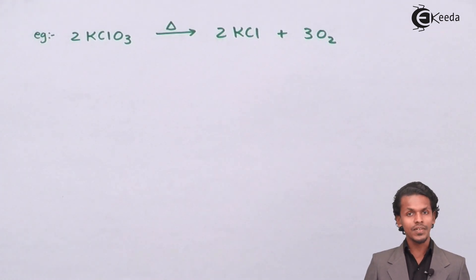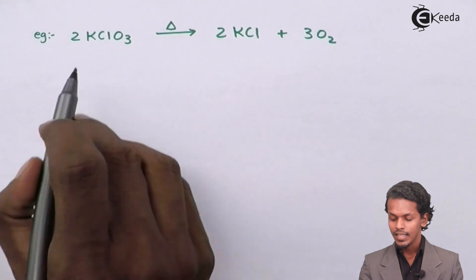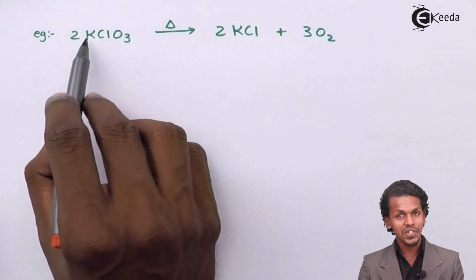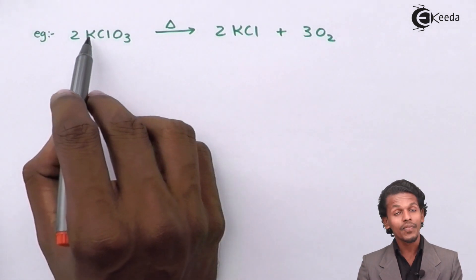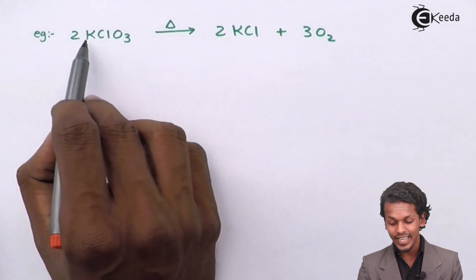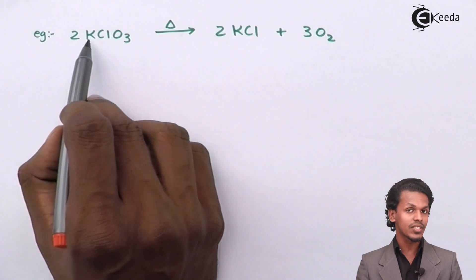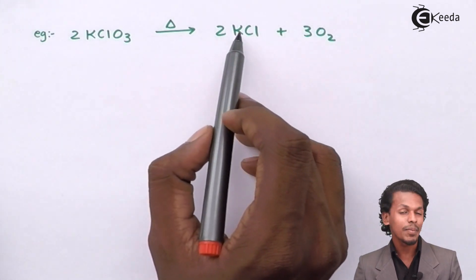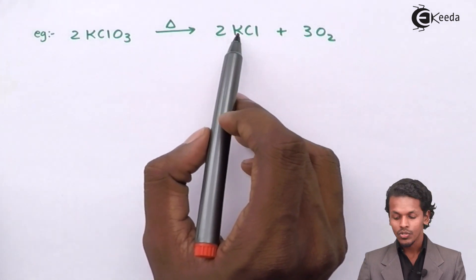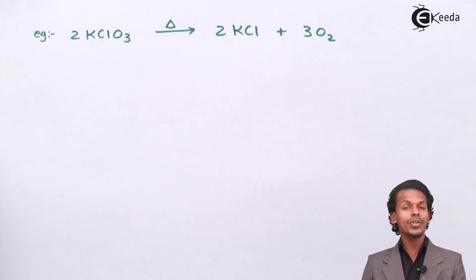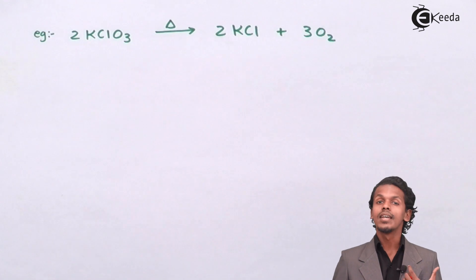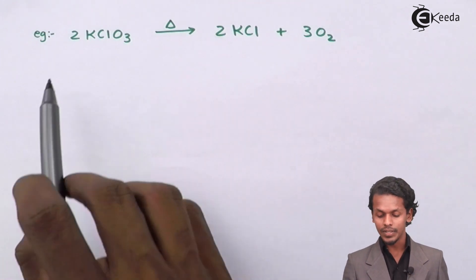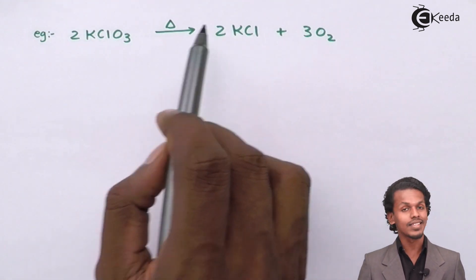If you observe potassium, its oxidation state is +1 and it always remains +1 — it stays the same. So we are not going to compare the oxidation number of potassium in this case.